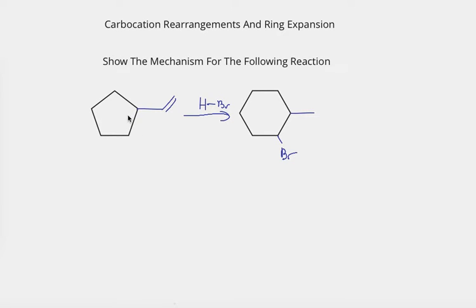We can see going from the reactant to the product that something happened because we started with cyclopentane and we are ending up with cyclohexane, so we had a ring expansion.